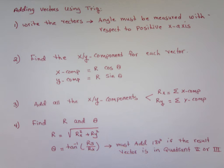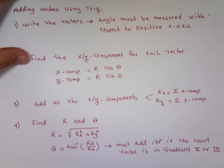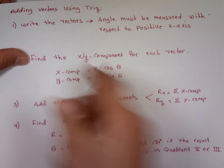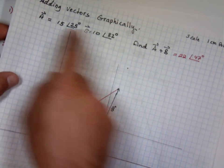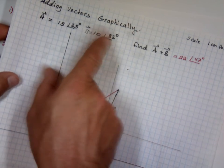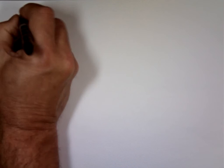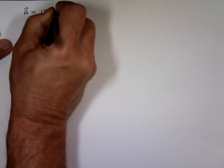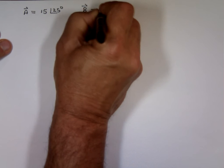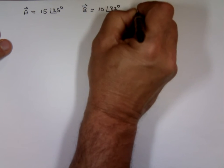Let's take the two problems we did there, just to see if we did them right. I'll make a table — that reminds me of all the pieces I need to do. I'm going to add these two vectors: vector A is 15 angle 25, and vector B is 10 angle 82. Find A plus B.